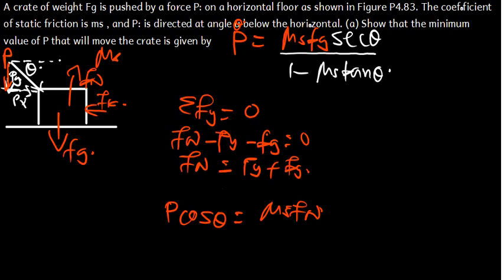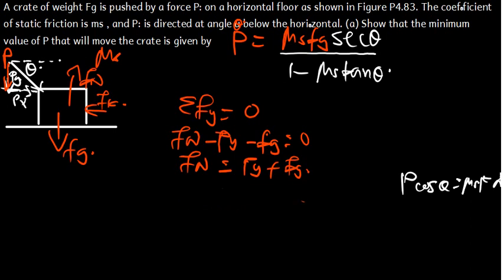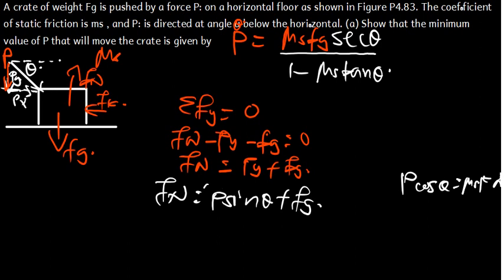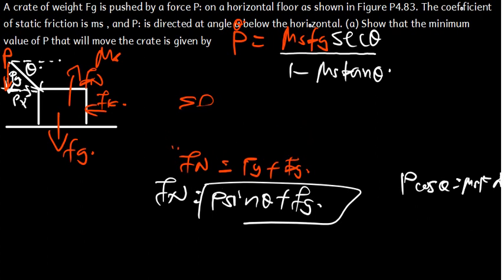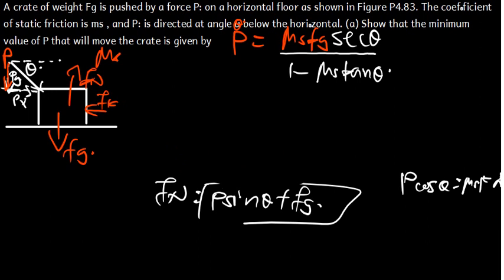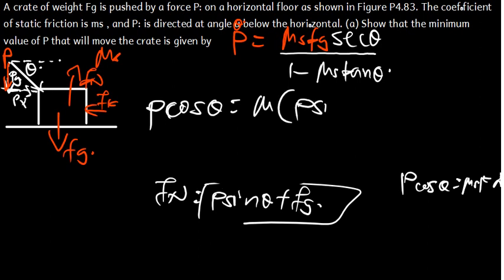So we have P cos theta equals mu_S times the normal force. We can now substitute for the normal force, which equals Py = P sin theta, plus Fg. We are going to replace the normal force in this equation with P sin theta plus Fg.